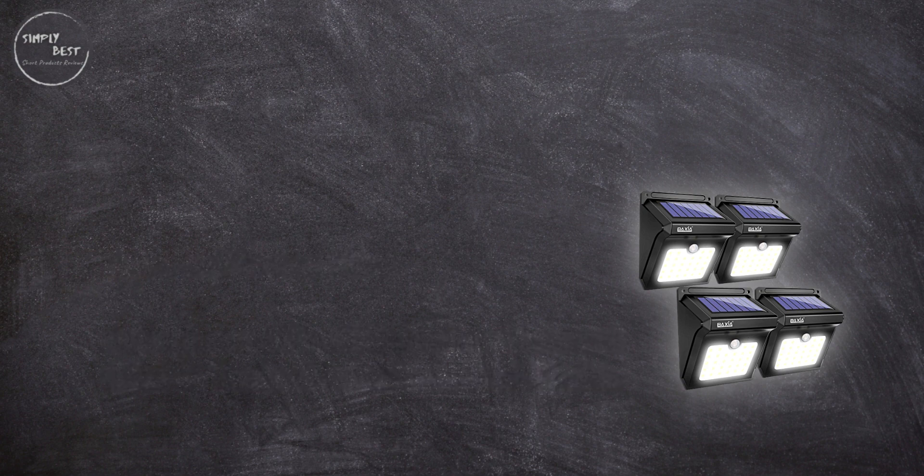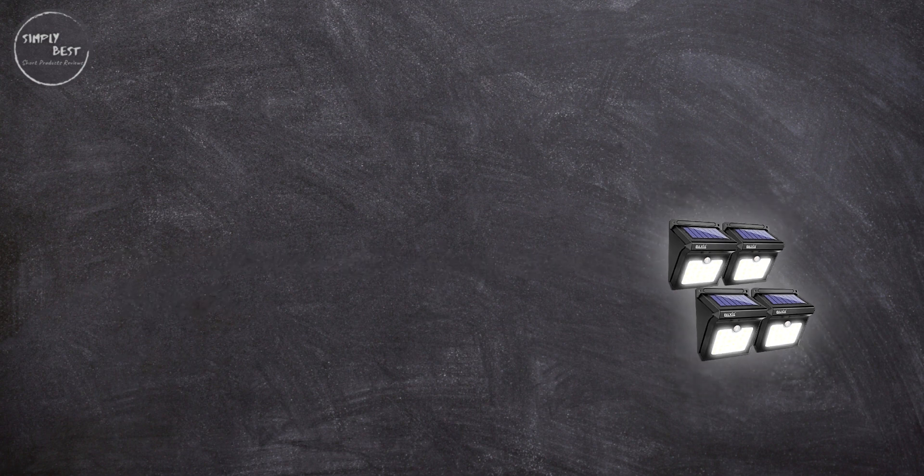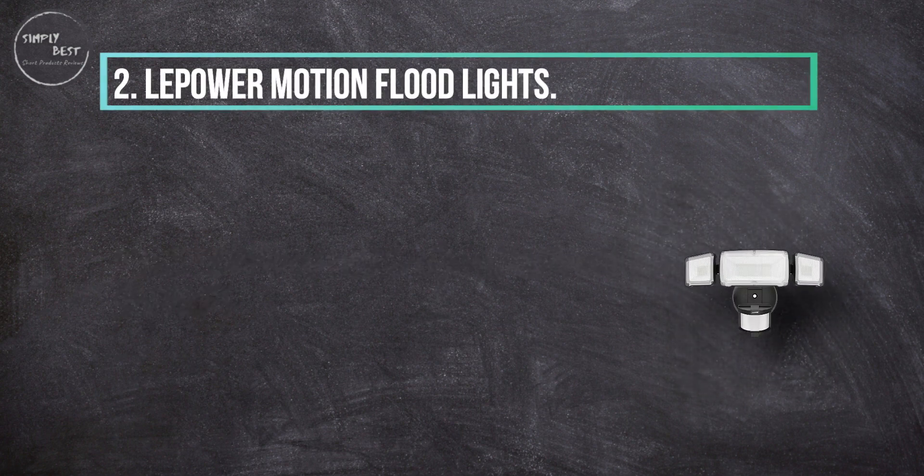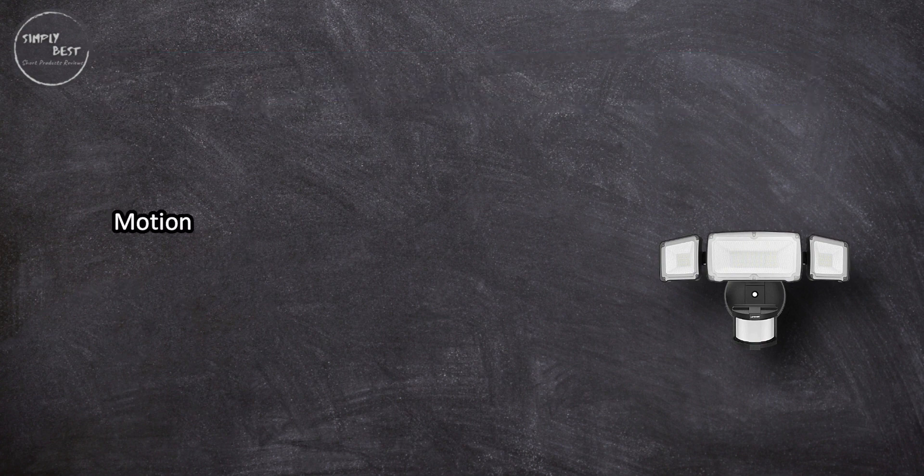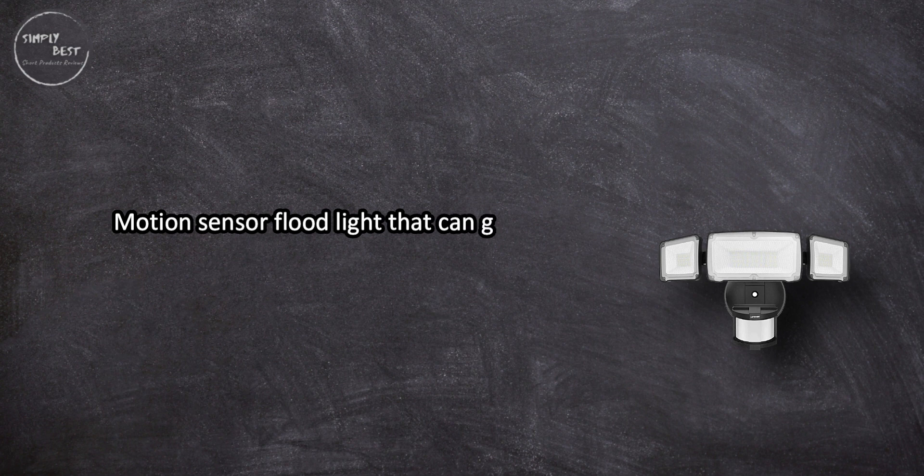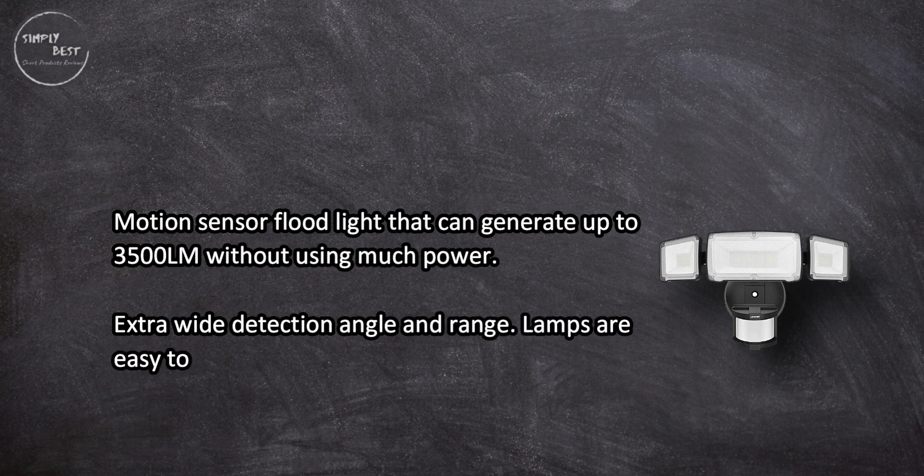At number 2: LEPOWER Motion Floodlights. Motion sensor floodlight that can generate up to 3500 lumens without using much power. Extra-wide detection angle and range.